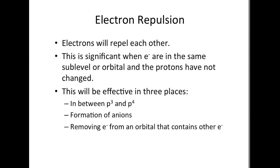Electron repulsion occurs when we have electrons in the same orbital or same energy level — electrons are going to start repelling each other. There are only three places you will ever mention electron repulsion: the P3 to P4 transition, the formation of anions, and when we remove electrons from orbitals that already contain electrons. Never mention electron repulsion in any other case. It'll make more sense when we start looking at some examples.